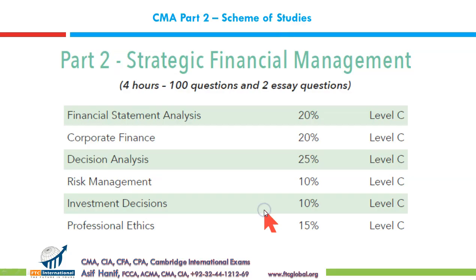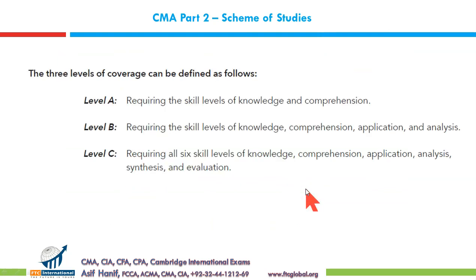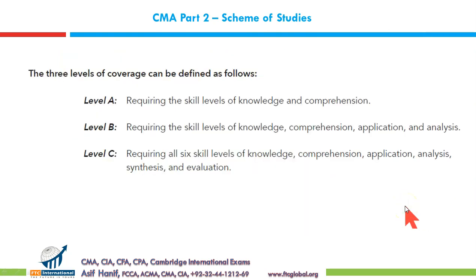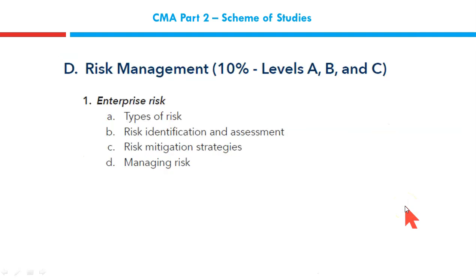Section D: Risk Management. We are right here — 10% of your syllabus. The level of testing is level C. This is what is included.